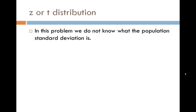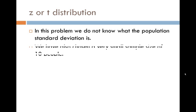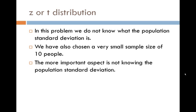Now we want to know if we should use a z or a t distribution. In this problem, we don't really know what the population standard deviation is, and we also have a really small sample size of only ten people. Probably the most important aspect of these two things is that we really don't know the population standard deviation. For this reason, we definitely want to use a t distribution.